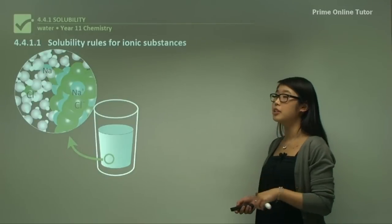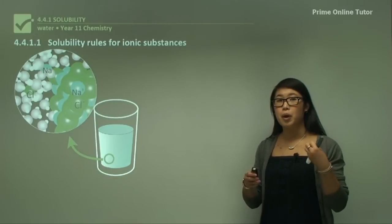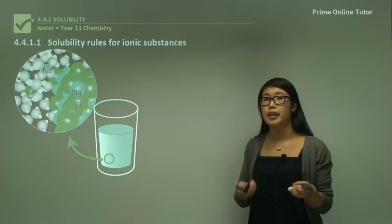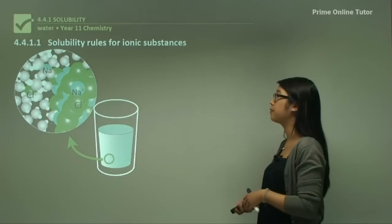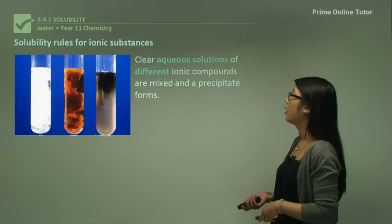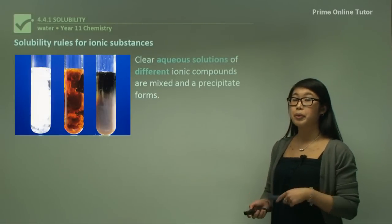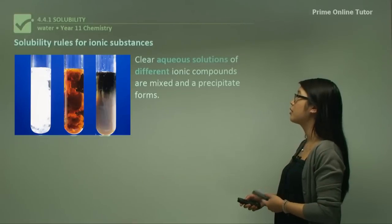Ionic substances are a positively charged cation and a negatively charged anion structure. We have a few solubility rules for ionic substances.